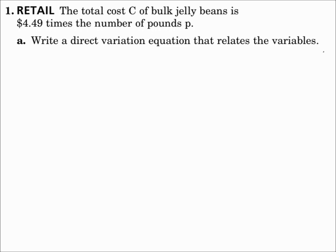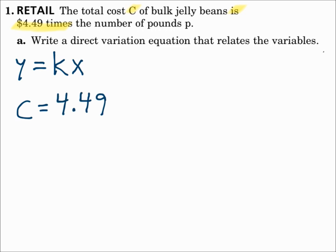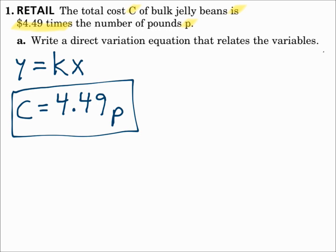Number 1. The total cost c of bulk jelly beans is $4.49 times the number of pounds p. Write a direct variation equation that relates the variables. This is definitely direct variation in the form y equals kx. The total variable is the cost c, and 'is' means equals. So the equation is c equals 4.49p — just like y equals kx.